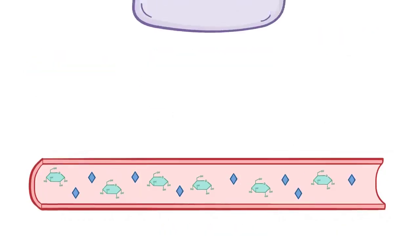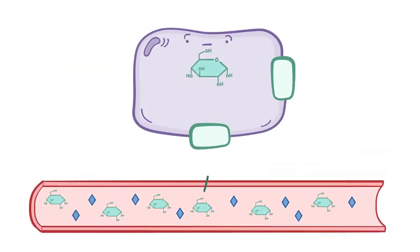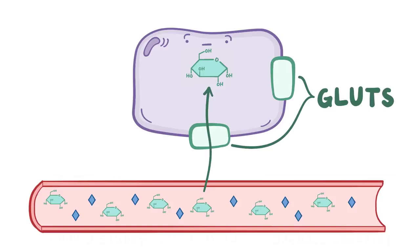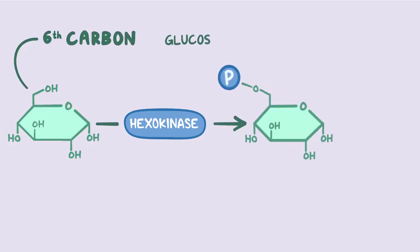Insulin makes more glucose enter cells through specific transporters called GLUTs. Once glucose is in the cell, an enzyme called hexokinase attaches a phosphate group to its 6th carbon, creating glucose-6-phosphate.